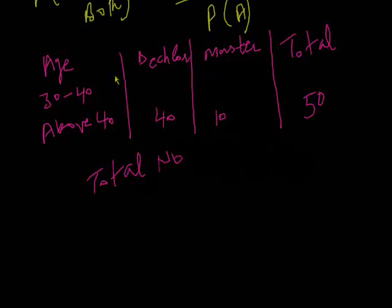In 30 to 40 age group and above 40, there are 200 total. Now if examiner asks the question: find